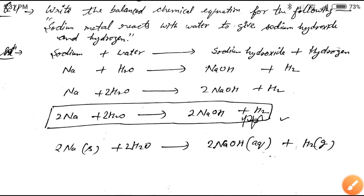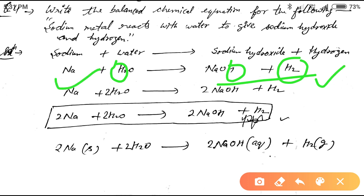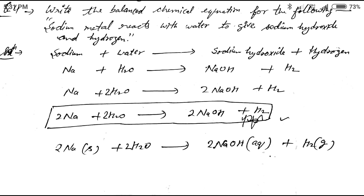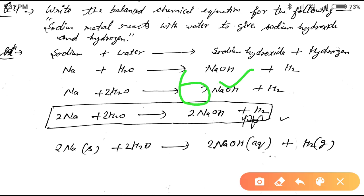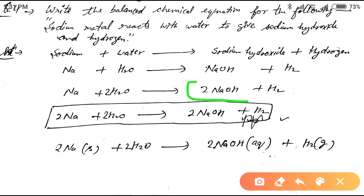Looking at hydrogen: on the reactant side there are two hydrogen atoms, and on the product side there are three. So we need to multiply by two on the product side to make the number of hydrogen atoms equal. When we multiply NaOH by two on the product side...